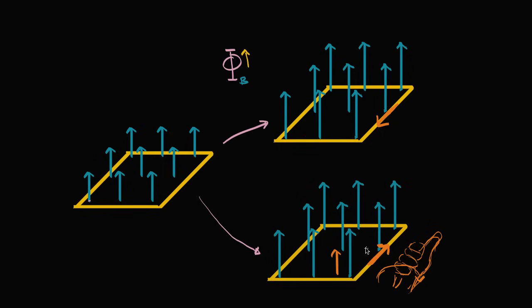Notice that this induced field would be additive to the existing magnetic field — it would increase the flux even more. If the flux increases more, the current increases. More current means more flux, which means even more current — a never-ending cycle. You'd have energy appearing out of nowhere, violating conservation of energy. That's a strong argument for why we would not expect the counterclockwise scenario: the induced current should not produce a magnetic field in the same direction as the increase in flux.